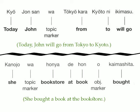Kanojo wa hon'ya de hon wo kaimashita — she, bookstore, at, book, bought. In other words, she bought a book at the bookstore.